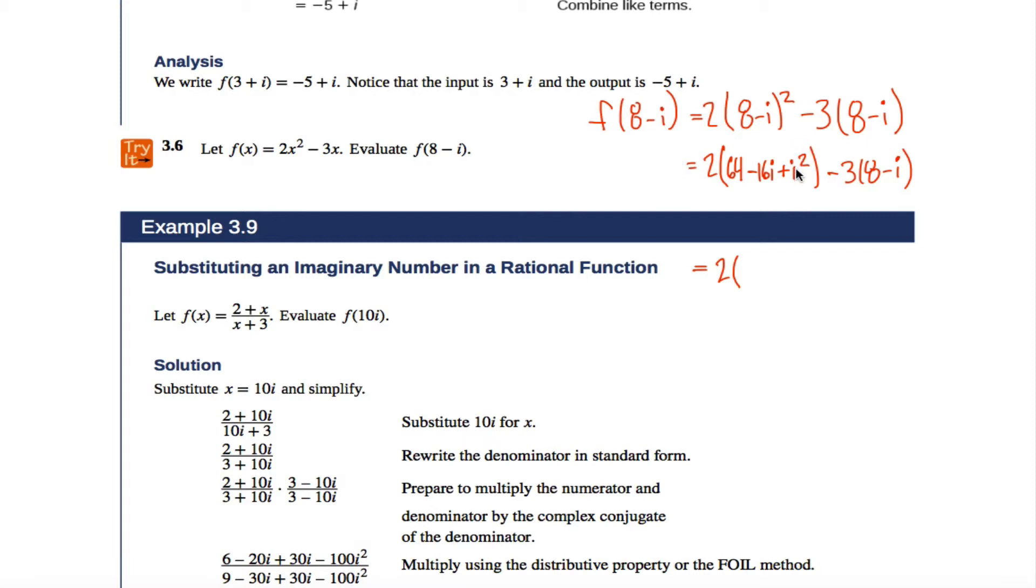i² is -1, so 64 and -1 is really just 63, and that gets me here. And in fact, I can simplify even further.